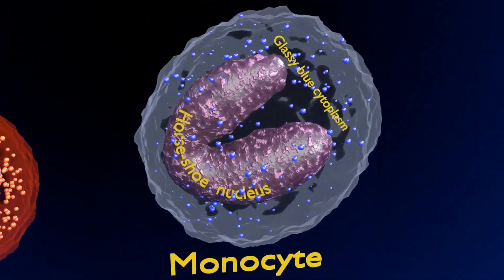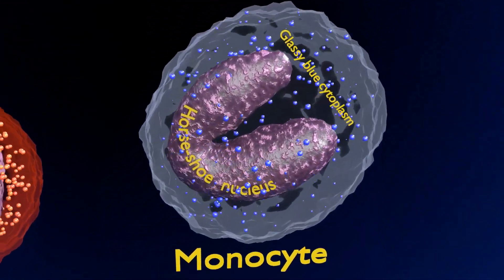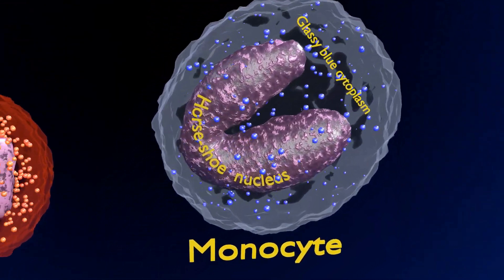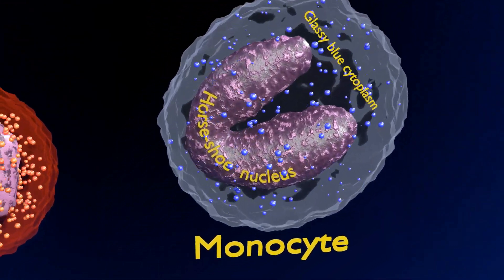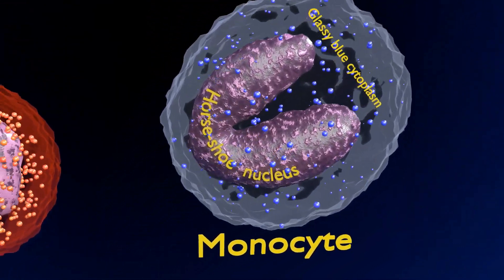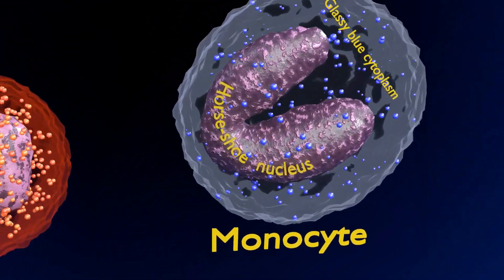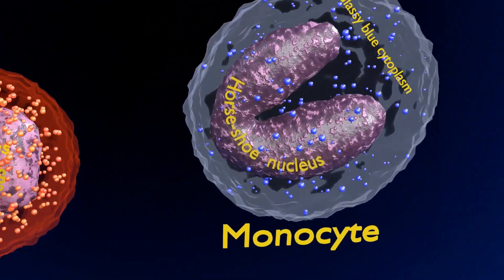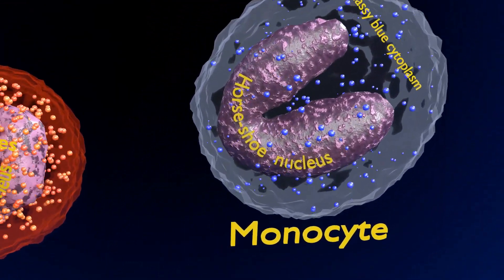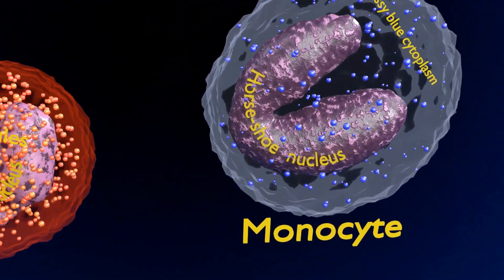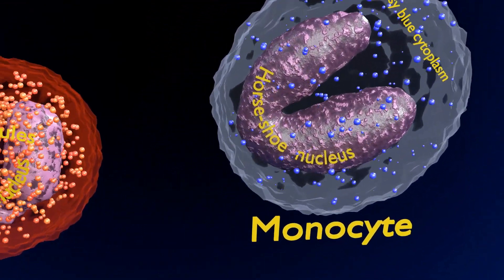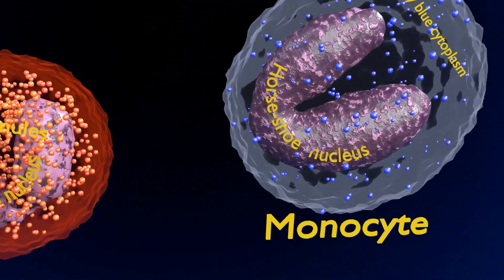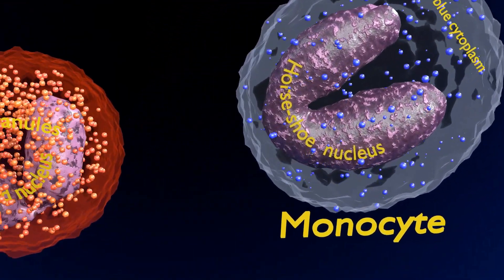As you can clearly see, the nucleus is indented or horseshoe in shape, which is the nuclear morphology typical of a monocyte. Its cytoplasm contains fine blue-gray coloured granules which give the cytoplasm of a monocyte a ground glass appearance.